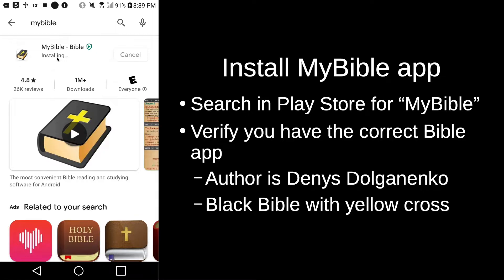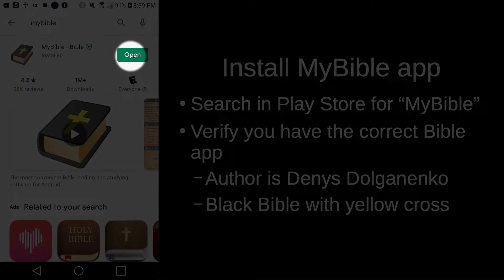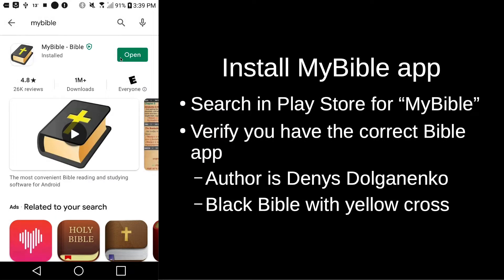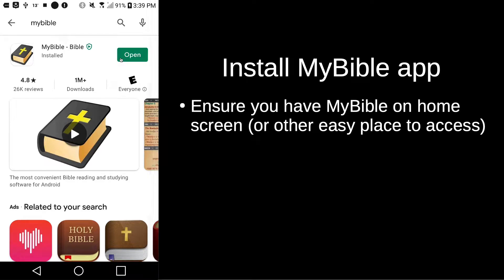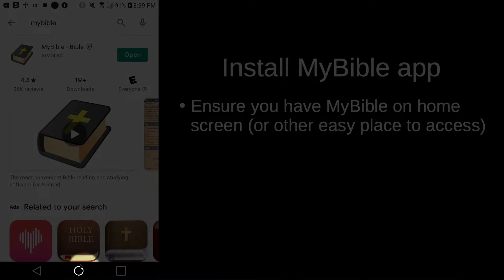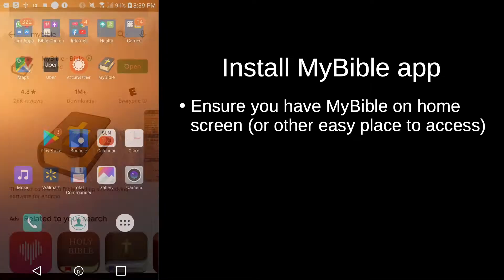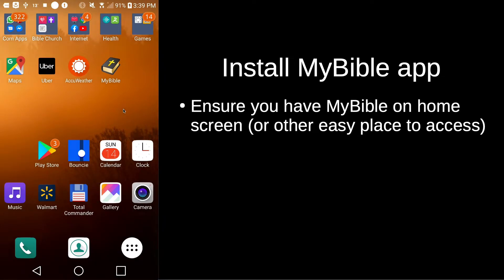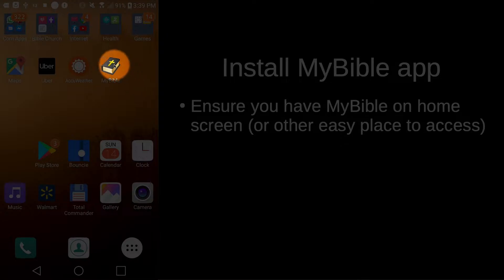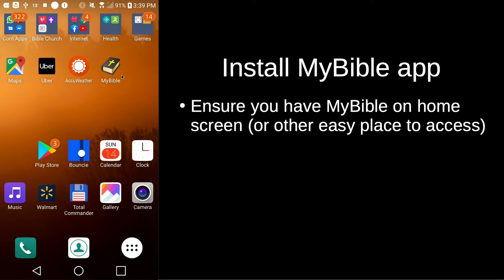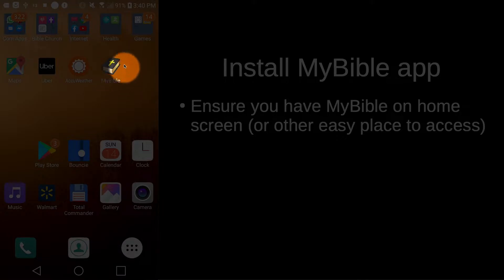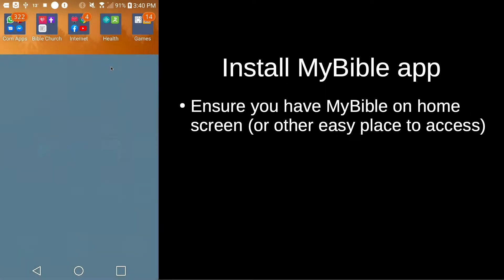Depending on the speed of your internet and the speed of your phone, this could take a while. Now you'll see here on my phone I now have this open, so I could tap here and open it. Instead of tapping there and opening it, I'm going to come down here and tap on my home indicator, and that's going to take me back to my home page. You'll notice on my home page that it's put the MyBible app right here in the next empty slot. On your phone, you'll just have to see where your phone put it, but you want to ensure that you have the MyBible app on your home screen or some other easy place where you can access it. So here on my home screen, I'm just going to tap it and this is going to launch the MyBible app.